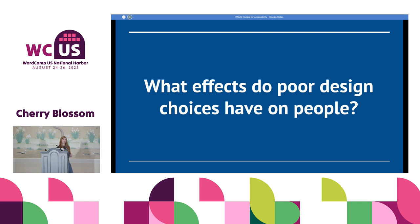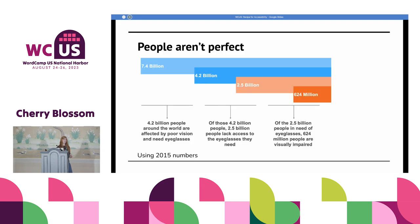Who is affected by poor design choices? The answer is people. People are not perfect — hundreds of millions of us are running around the world imperfect. As of 2015 there were about 7.4 billion people in the world, and it's estimated that about 4.2 billion of those people were affected by poor vision.